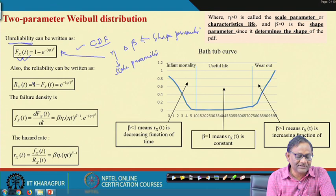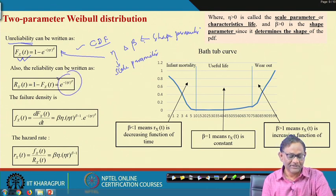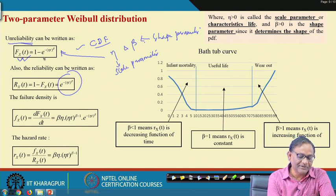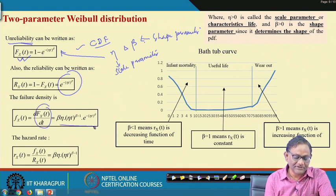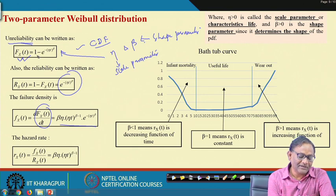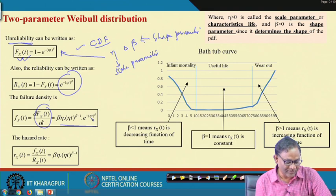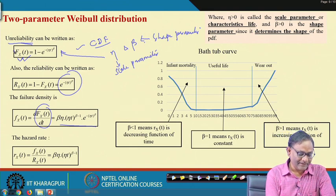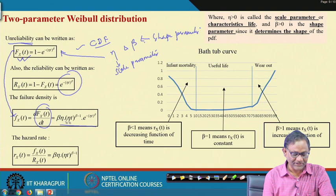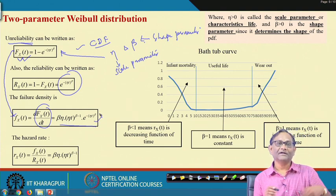If F(t) is the CDF, then R(t) = 1 − F(t) = exp(−η·t^β). Taking the derivative of F(t) with respect to t, you get f(t) = β·η·(η·t)^(β−1)·exp(−η·t^β). These follow from standard calculus.